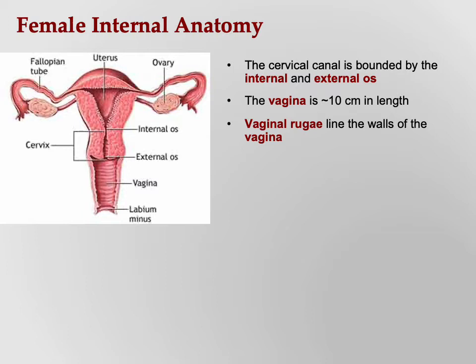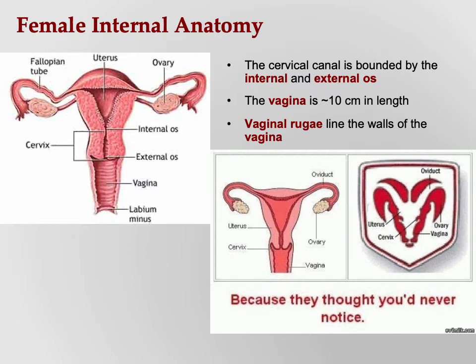Vaginal rugae line the walls of the vagina. Like the rugae of the stomach, they're ridges where the tissue is loose to allow expansion — you need the vagina to stretch to accommodate a baby's head. The rugae also provide little ridges that may provide stimulation during sex, which is why many condoms are ribbed, mimicking the rugae. Interestingly, the Dodge car logo resembles the uterus with the uterine tubes and ovaries.